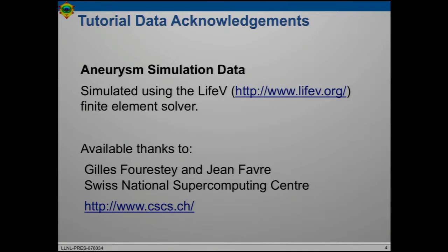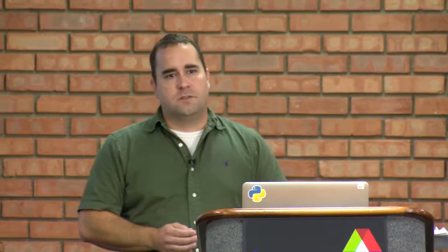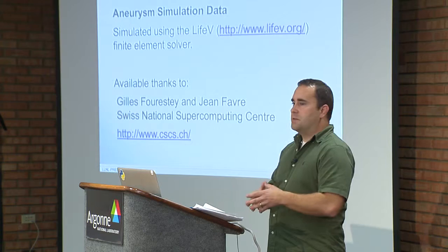The aneurysm data comes from colleagues at the Swiss National Supercomputing Center who provided it for us. It's a really great dataset. We've been criticized in years past for having toy data, so we put effort into getting this nice aneurysm blood flow dataset and made it small enough — a couple hundred megabytes — to use in classes like this. It was created using a finite element solver called LIFE, and it emerged from the European HPC community's challenges around medical simulation.